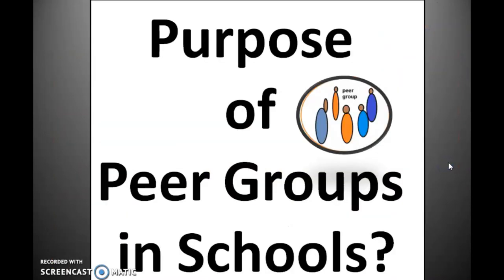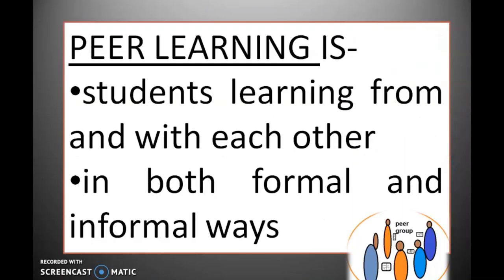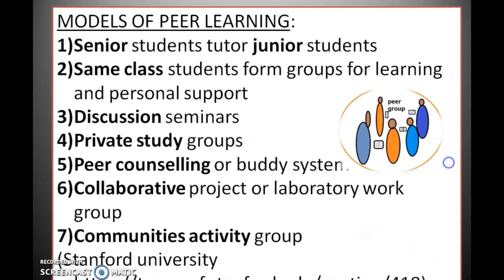What is the purpose of peer groups in schools? The main purpose is to create peer learning groups. Peer learning is students learning from and with each other in both formal and informal ways. There are various models of peer learning — for example, senior students tutoring junior students, same-class students forming groups for learning and personal support, discussion seminar groups, private study groups, peer counseling or buddy systems, collaborative project or laboratory work groups, and community activities.